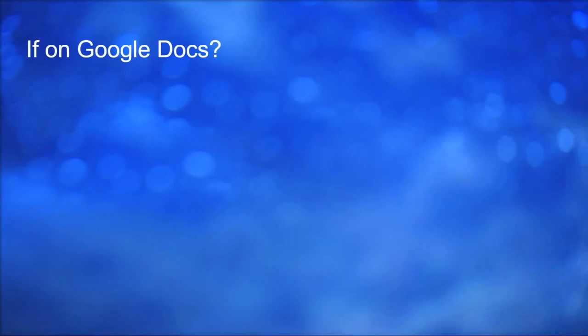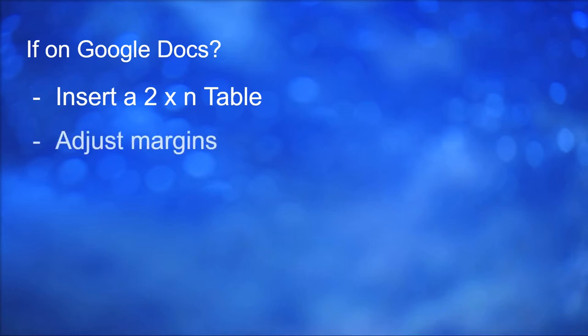So what if you don't want to write your notes and you want to type out your notes, for example on Google Docs? Then what you can do is to insert a two times n table. So go to the insert button and click on tables and you insert a two times n table, so n rows. So if you have n questions you want to put then n rows. Then you adjust the margins so that it's not like four equal quadrants and like one is bigger and one is smaller like I showed you earlier.